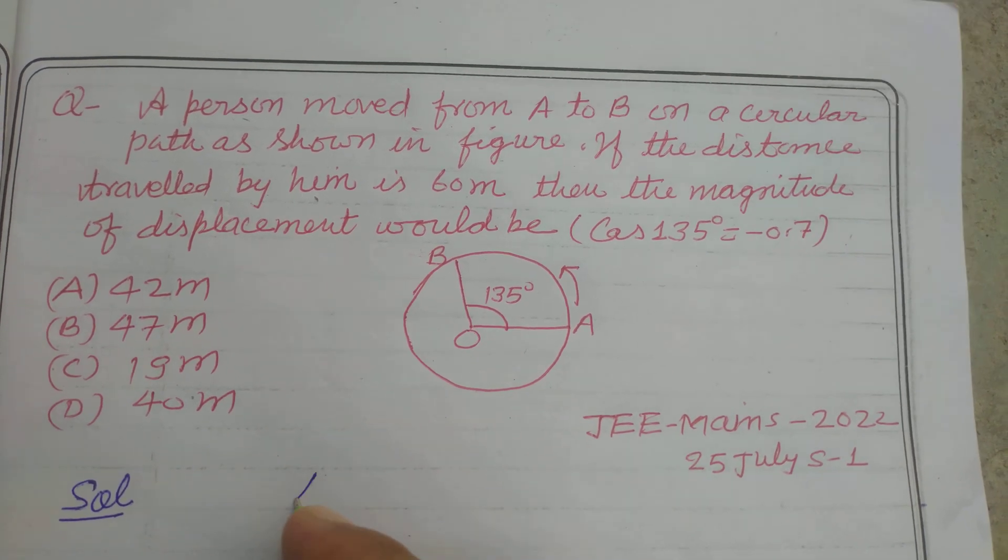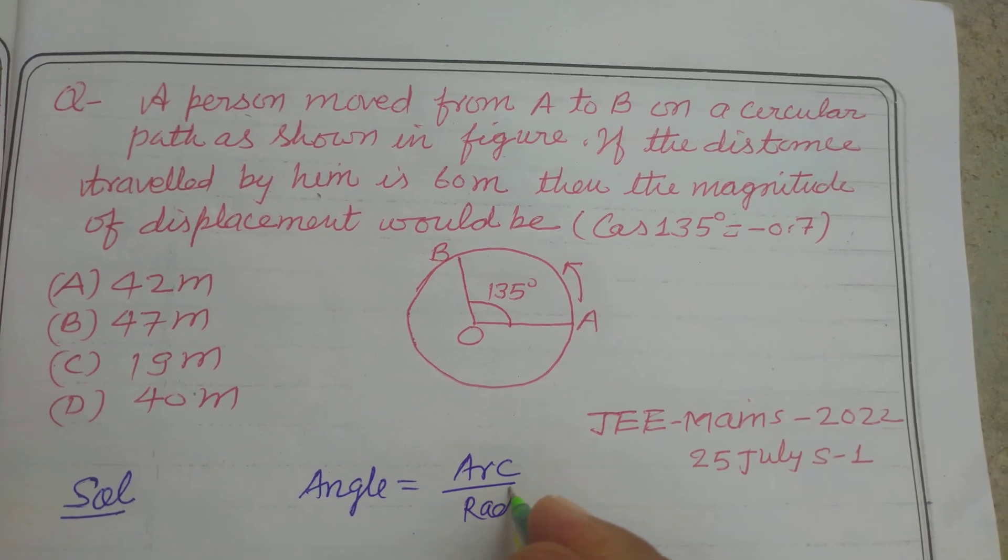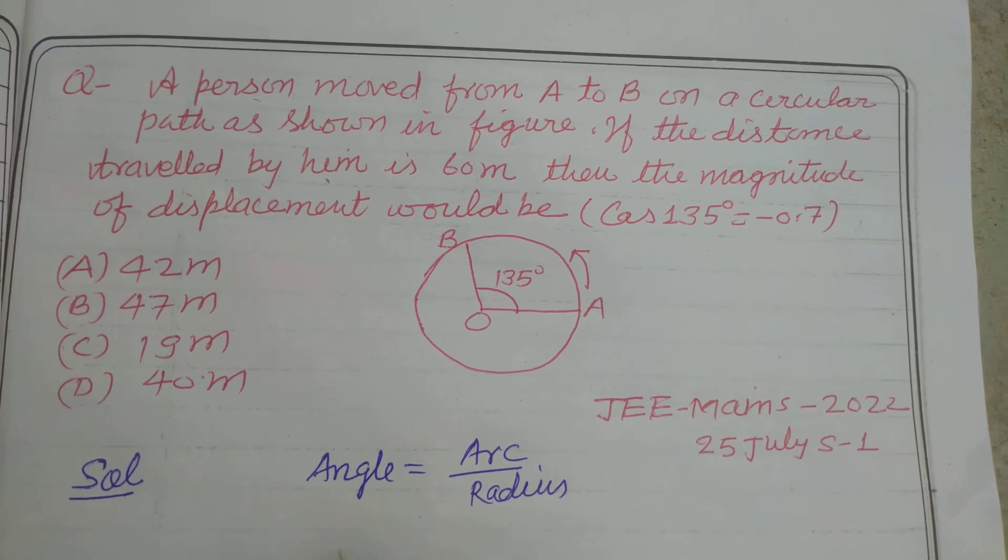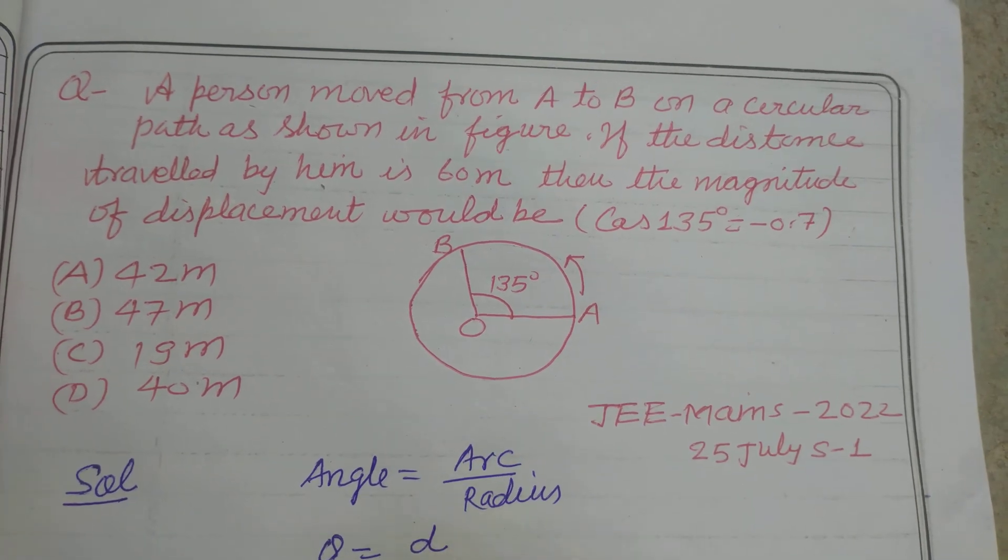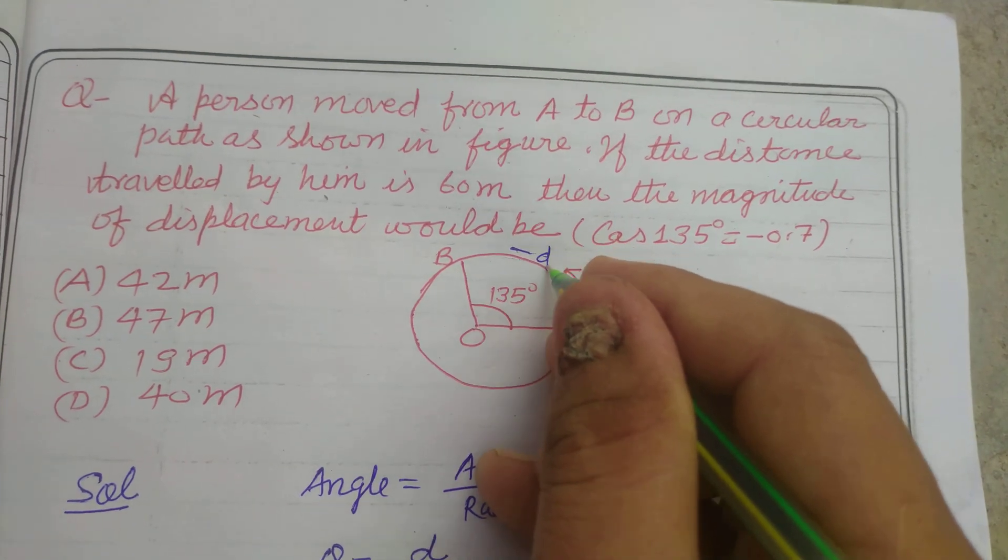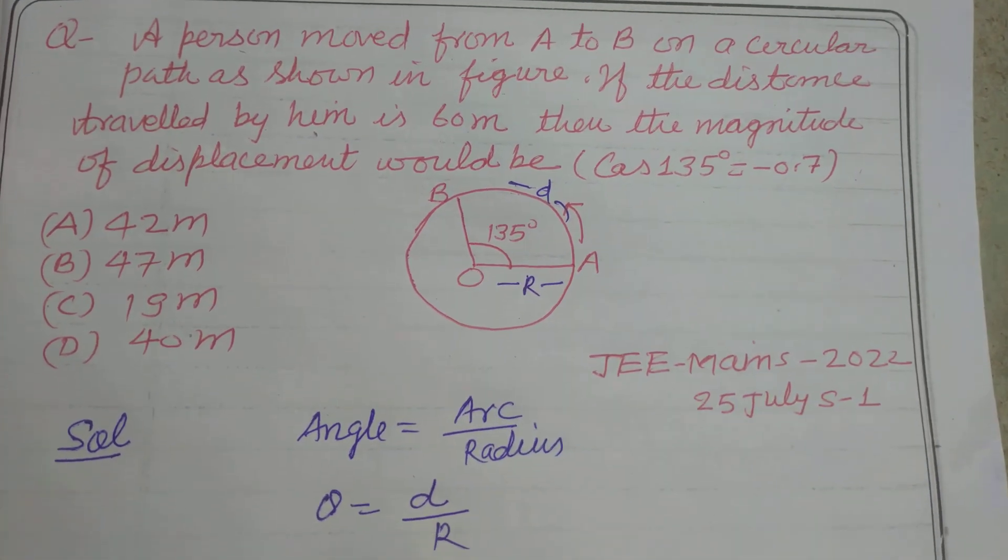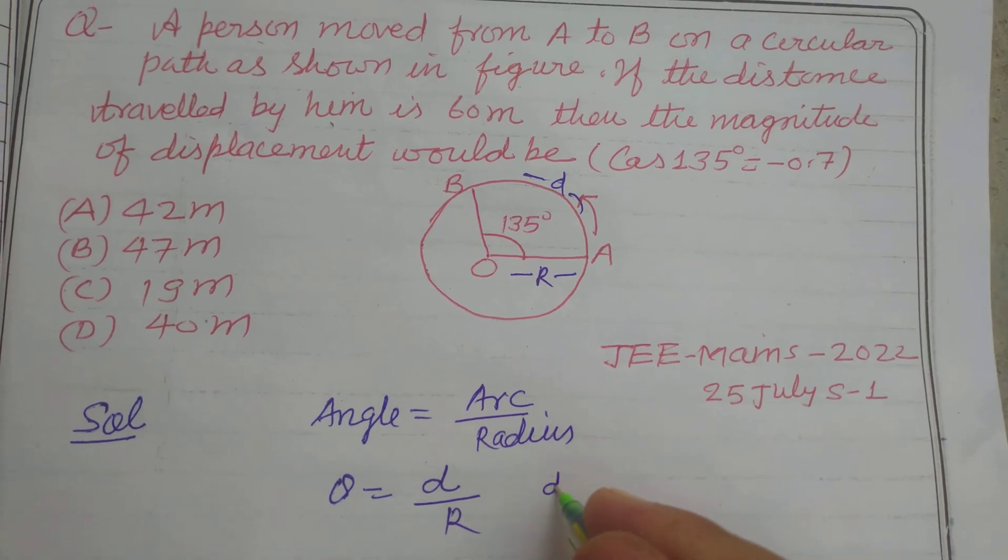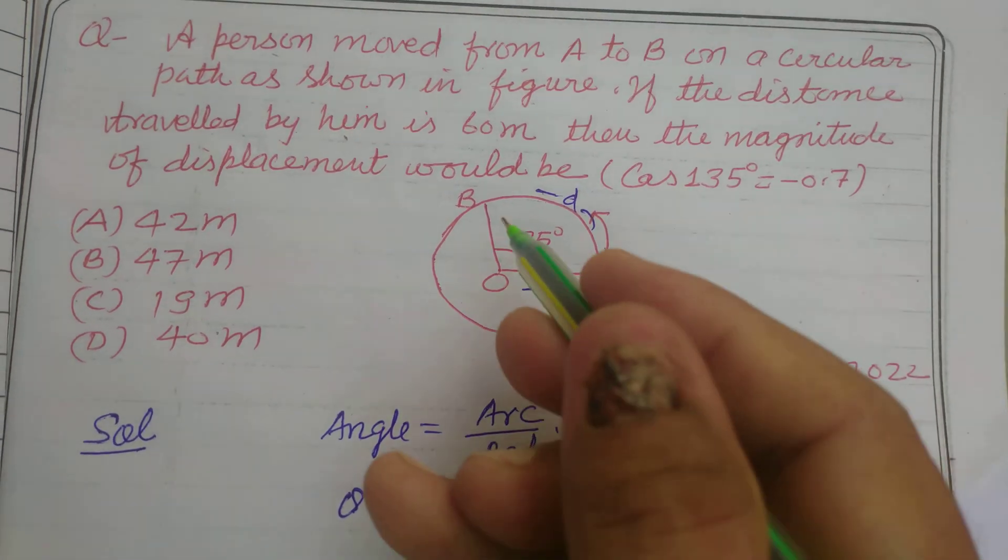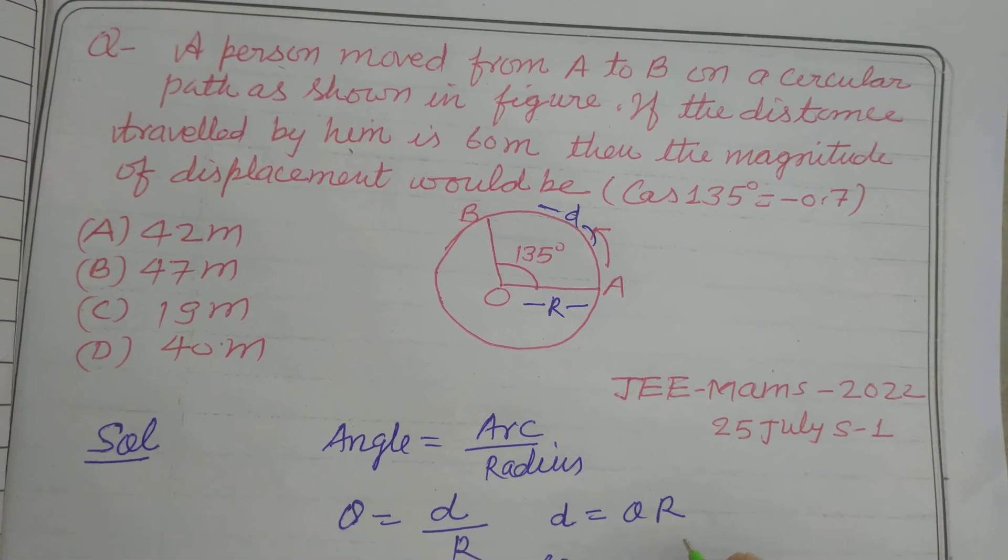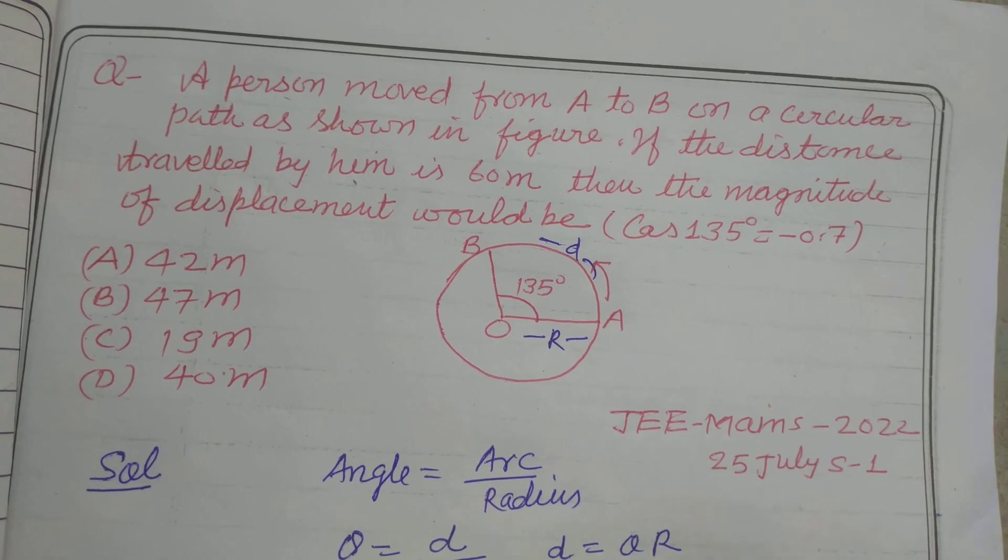You know that angle equals arc over radius. So theta equals arc, here AB which we taken as D. Let this is D. So D over radius R. So D equals theta into R. And D is given to us which is 60 meter, and theta is 135 degree and R we want to find out here.